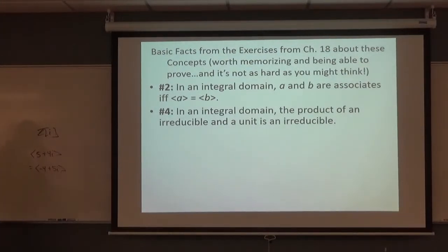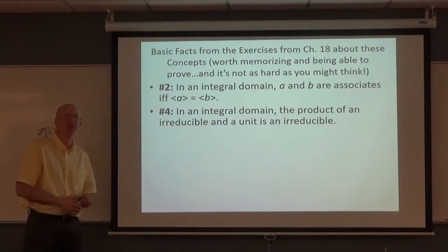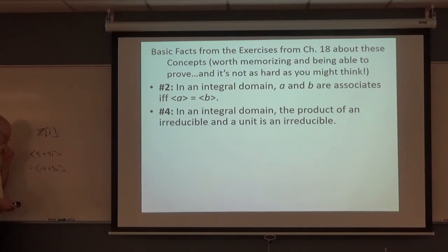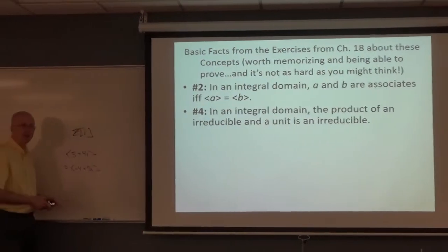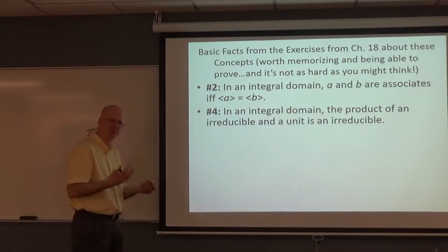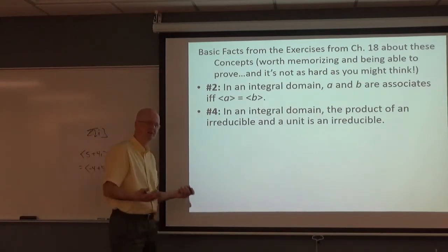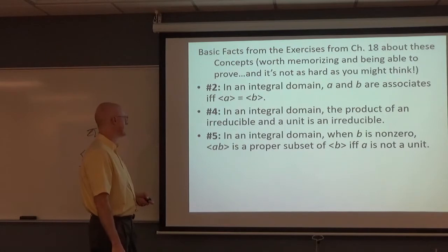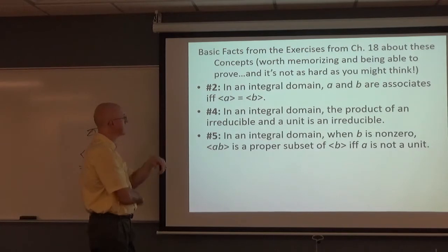In an integral domain, the product of an irreducible and a unit is irreducible. If I multiply 7 by negative 1, I get negative 7, which is also irreducible. If I pick an irreducible in the Gaussian integers and multiply it by i, I get another irreducible. Multiplying by the unit doesn't change that property, because units are kind of like plus or minus 1 — trivial in a sense.